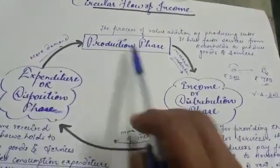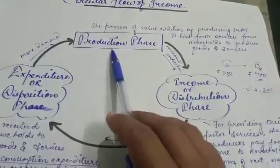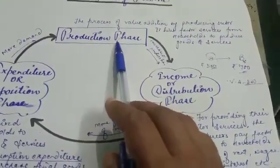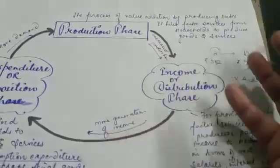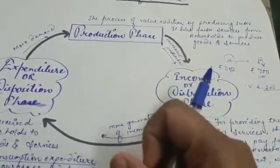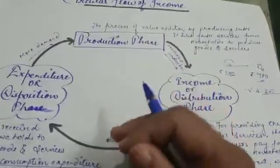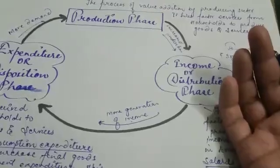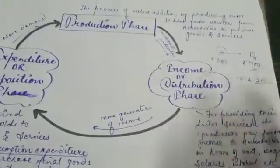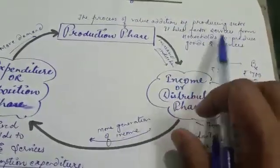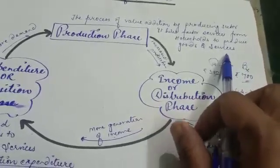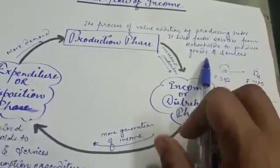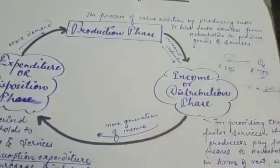A circular flow of income comprises three different phases. The first phase is the production phase. During the production phase, producers hire factor services from households — they employ workers who come from the household sector. We provide our factor services to the producers, and with the help of these workers, producers carry on the production of goods and services.